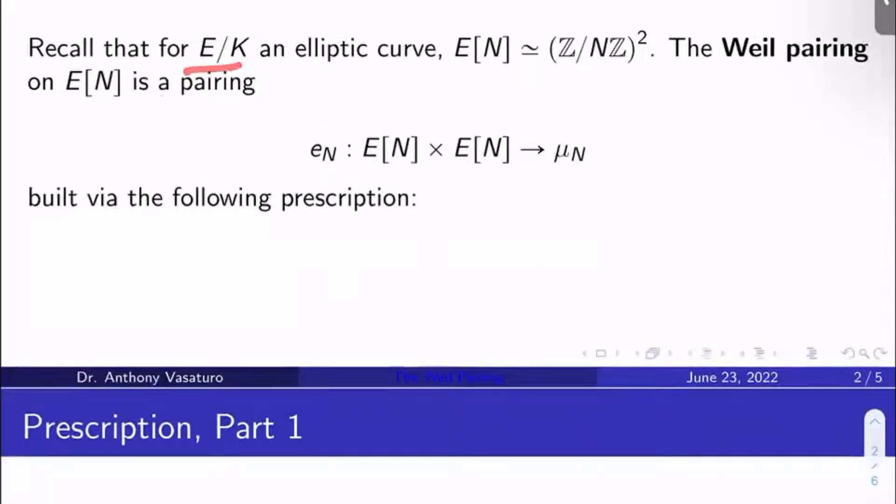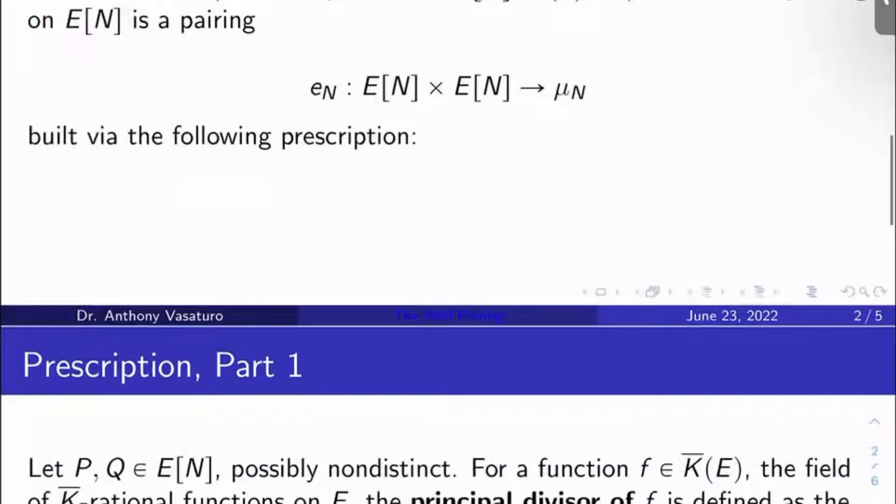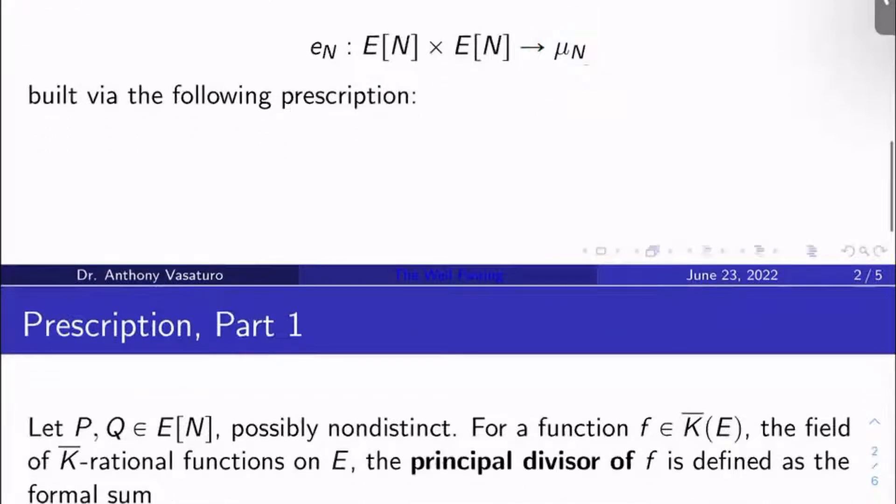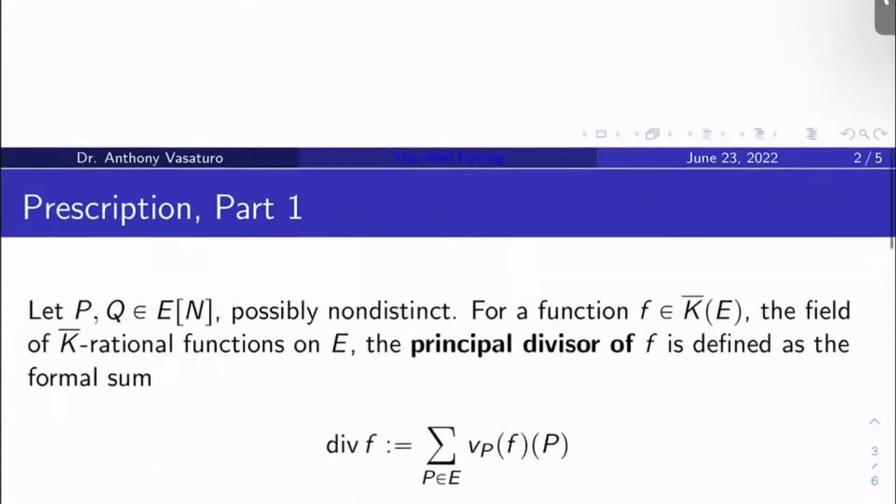And so if E over K is an elliptic curve, recall, we talked about this when we were discussing basic elliptic curve theory. The N torsion of E is isomorphic to (Z/NZ)². The Weil pairing on the N torsion of E then is a pairing, which is usually denoted e_N from E[N] × E[N] to μ_N, the Nth roots of unity. And it's built via the following pretty neat prescription.